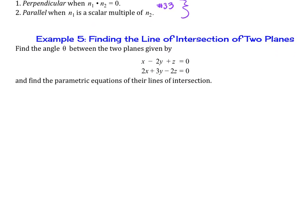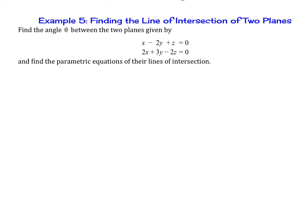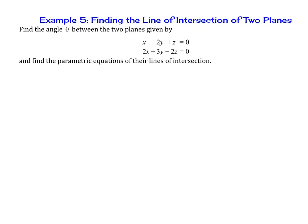Example 5: we're going to find the line of intersection of two planes. We're going to find the angle theta between the two planes given by the equations x minus 2y plus z equals 0, and 2x plus 3y minus 2z equals 0. Then we're also going to find the parametric equations of their line of intersection.